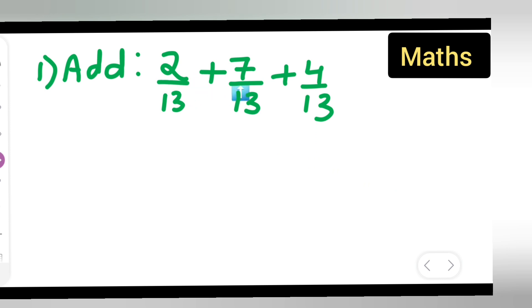2/13 + 7/13 + 4/13. Here the denominator is the same, right? So first you write down 2/13 + 7/13 + 4/13. Now this will be equal to...